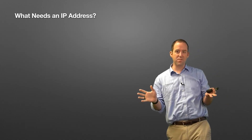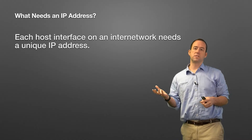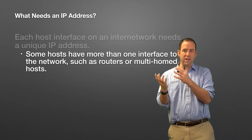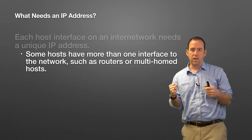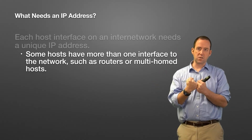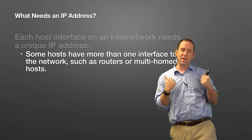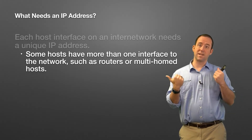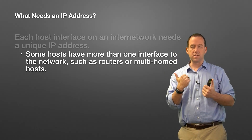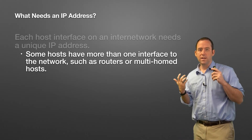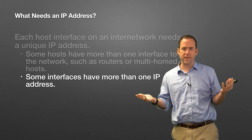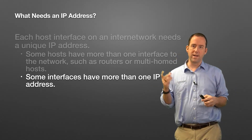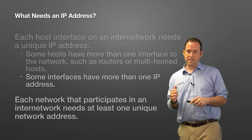So what needs an IP address? Every single host interface on a network needs a unique IP address. Some hosts might have more than one interface — for example, your router at home is connected to an internal network and an external network. That's two different interfaces, meaning your router has two different IP addresses: one for the internal network, one for the external network. A computer connected to multiple networks with multiple network interfaces would similarly need one IP address per interface.